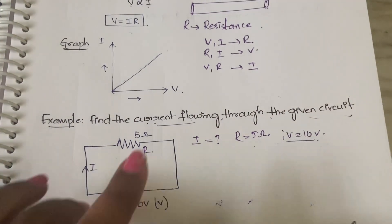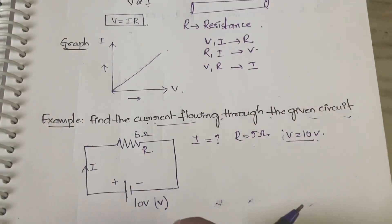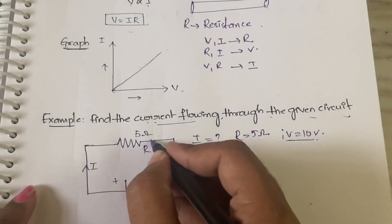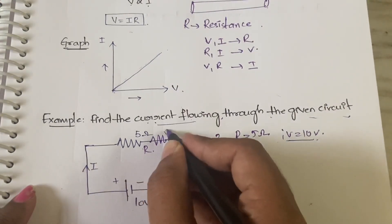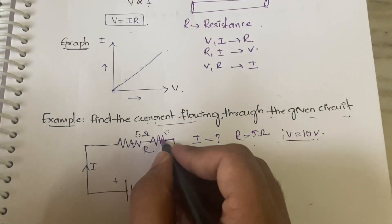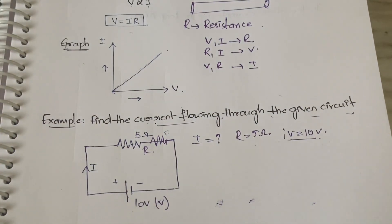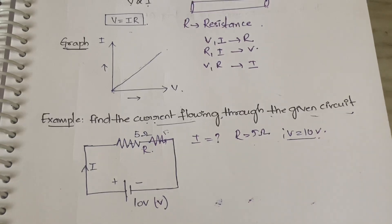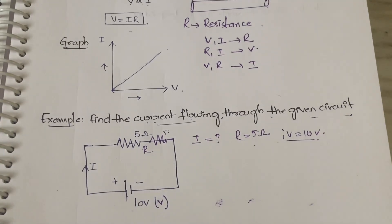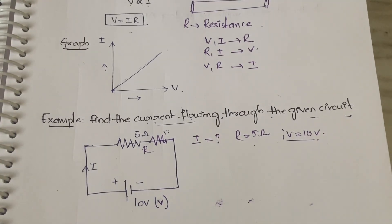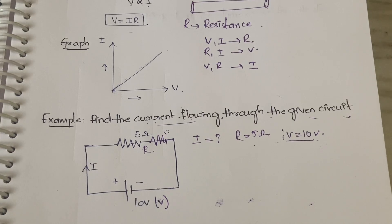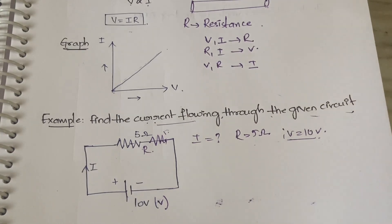Here we have only one resistance, 5 ohms, so you can directly take it. Suppose you have another resistance connected here of 5 ohms, then you need to calculate the equivalent resistance of both. If they are connected in series, R1 plus R2. If they are connected in parallel, 1 by R1 plus 1 by R2.